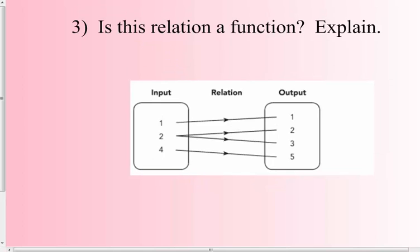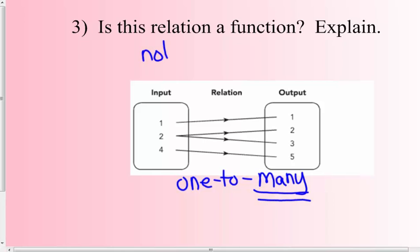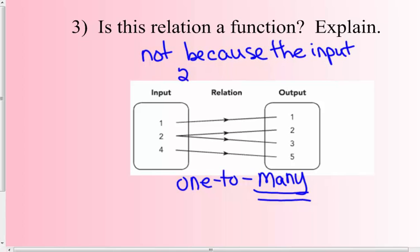Number three: is this relation a function? No. Two has two different outputs, so each input doesn't have exactly one output. This is a one-to-many relation. Whenever you have 'many' after the word 'to,' that is not a function. The input two has two outputs — both two and three — so it does not have only one output.